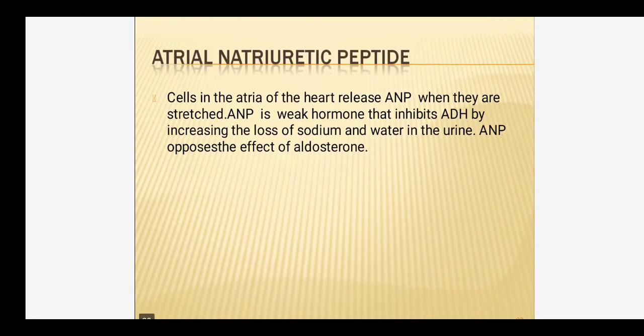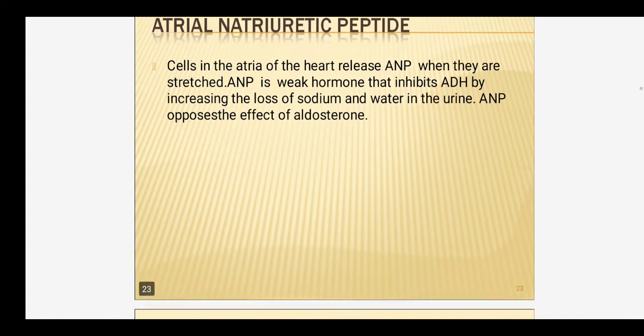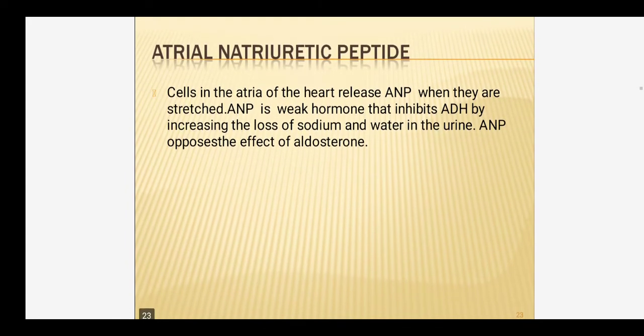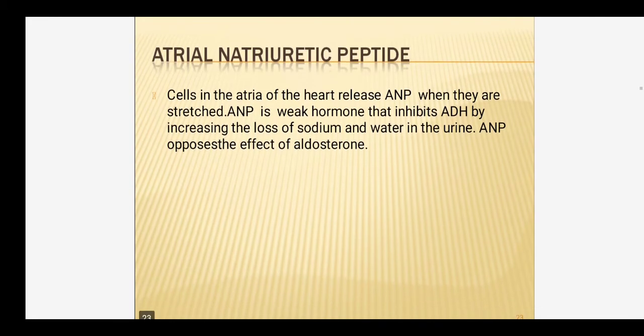Third is atrial natriuretic peptide (ANP). ANP is just the opposite of ADH — while ADH decreases diuresis, ANP increases urine output. When water is more in the body, this hormone is activated. It is released from cells in the atrium and is a weak hormone with effects opposite to ADH.